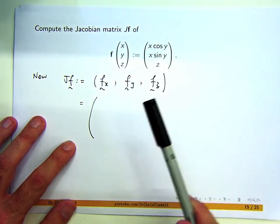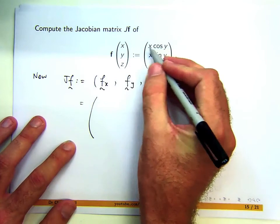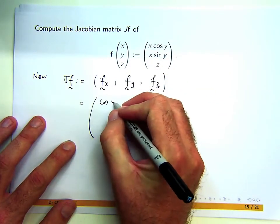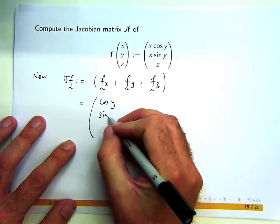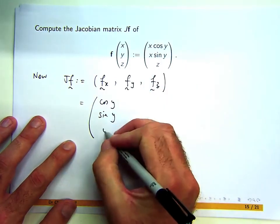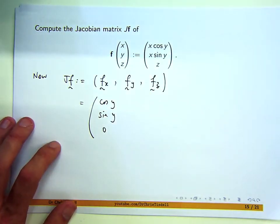This is going to become cos y, this is going to become sin y, and down here that's just going to become zero. I'm not going to put the commas in anymore.